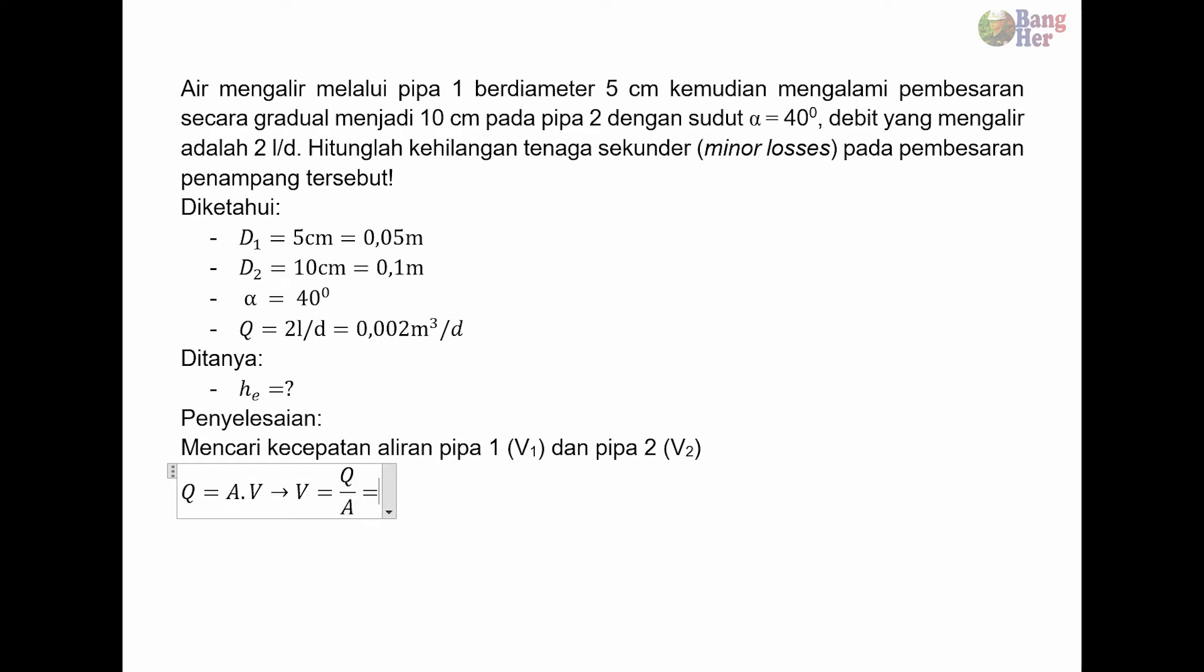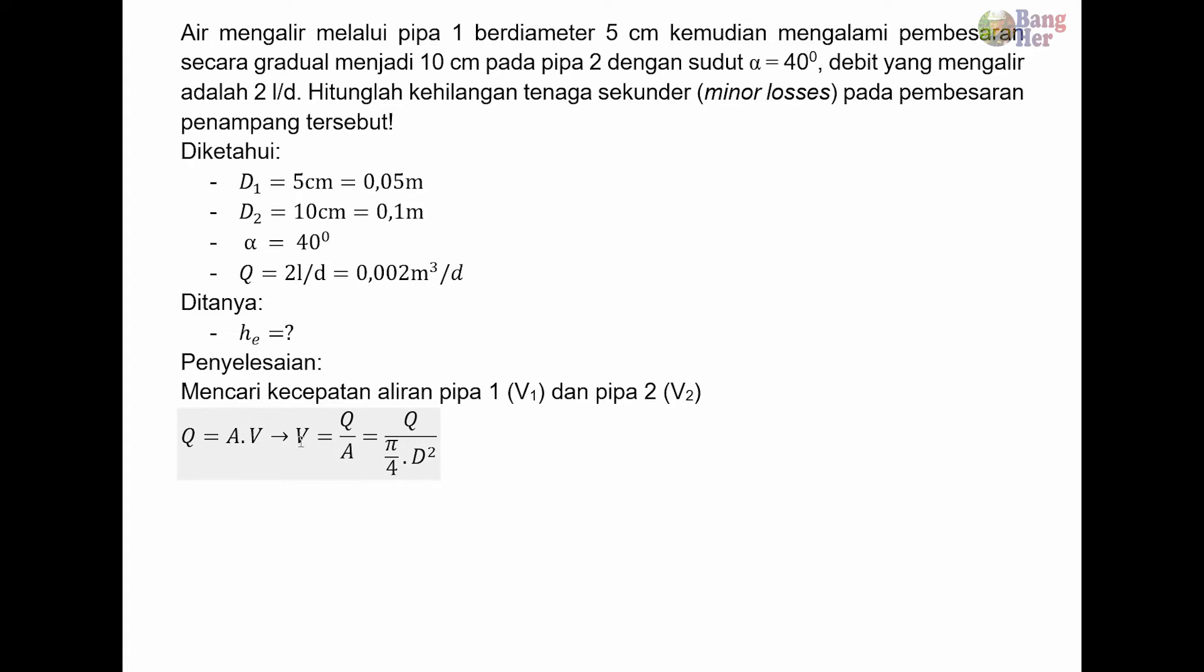A adalah luas penampang pipa. Luas penampang pipa berbentuk lingkaran, jadi A bisa kita jabarkan menjadi 1/4 pi D kuadrat, karena yang diketahui D-nya. Sehingga persamaannya menjadi V sama dengan Q per 1/4 pi D kuadrat. Jadi persamaan untuk mencari kecepatan adalah ini.